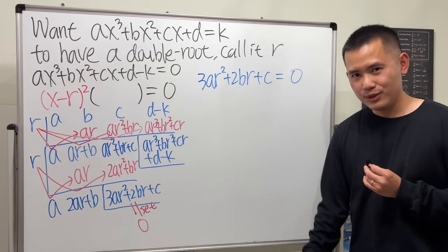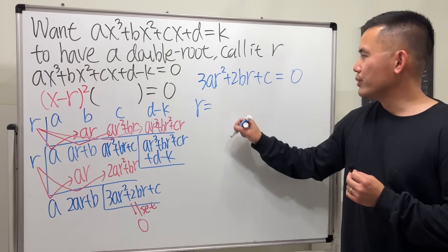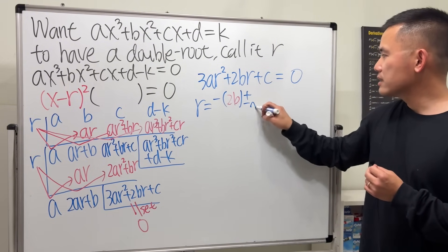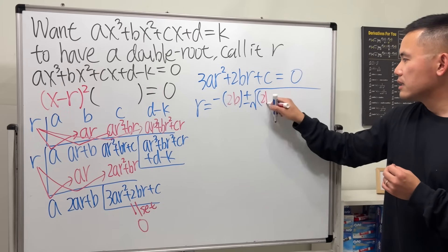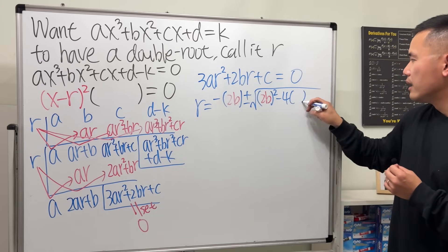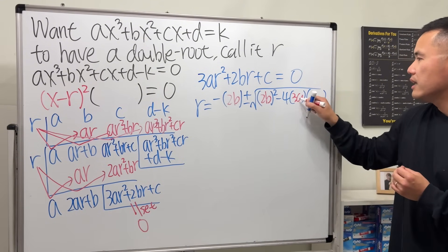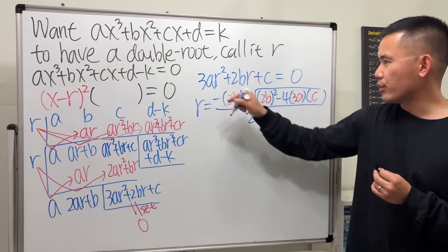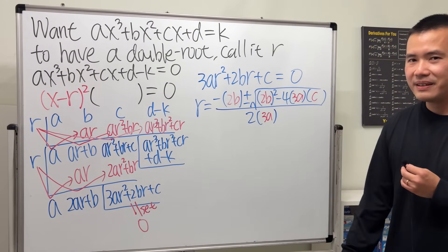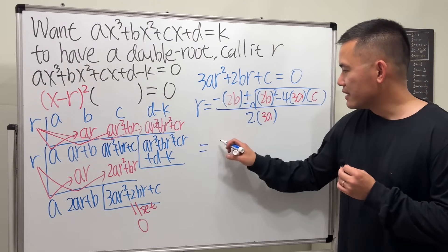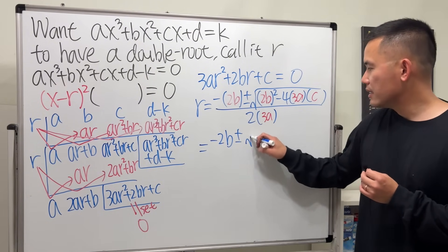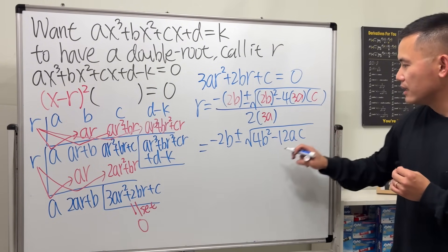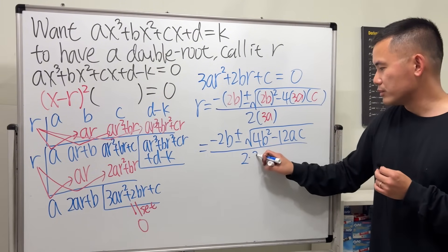r equals negative b — which is 2b in our equation — plus or minus square root of (2b) squared minus 4 times 3a times c, all over 2 times 3a. Let's simplify: that is negative 2b plus or minus square root of 4b squared minus 12ac, over 2 times 3a.